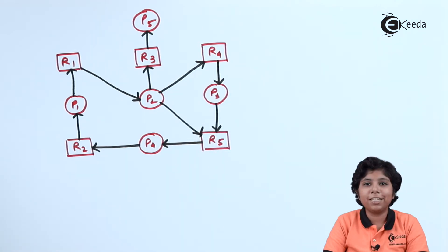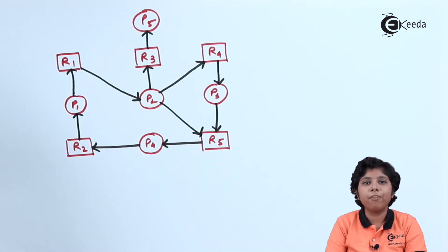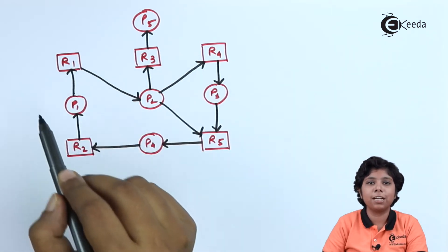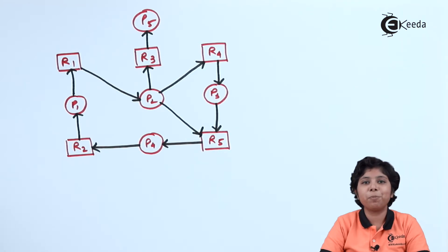Now we will see how to convert a resource allocation graph into a wait-for graph. There are five resources of each instance type and five processes in this resource allocation graph. To construct the wait-for graph, we remove all resource vertices and consider only the process vertices. First, we place the process vertices in the wait-for graph.